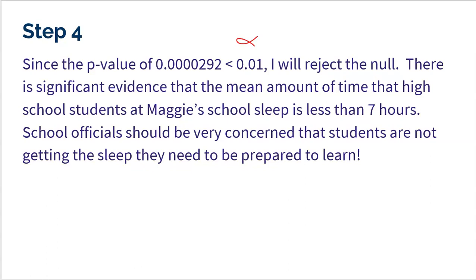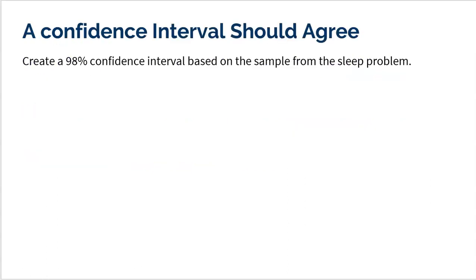I also want to show that a confidence interval should agree with our test conclusion. Let's create a 98% confidence interval. I'm choosing 98% confidence because that puts 1% in the lower tail — matching the 1% alpha level used in the test. Maggie needed to show her sample was in that bottom 1%, so a 98% CI is appropriate. We already checked conditions, so I'll go straight to the interval: 6.23 plus or minus a T* for 98% confidence.